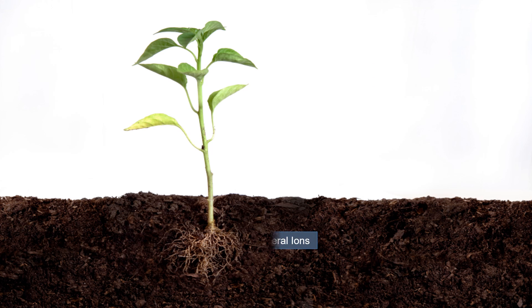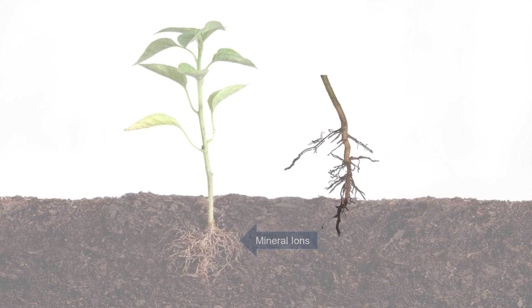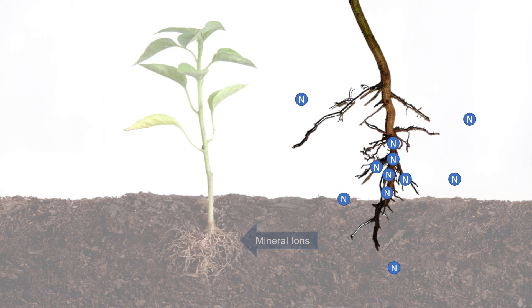In plant root hairs, active transport allows mineral ions to be absorbed from very dilute solutions in the soil. These mineral ions are vital for a plant to maintain healthy growth.